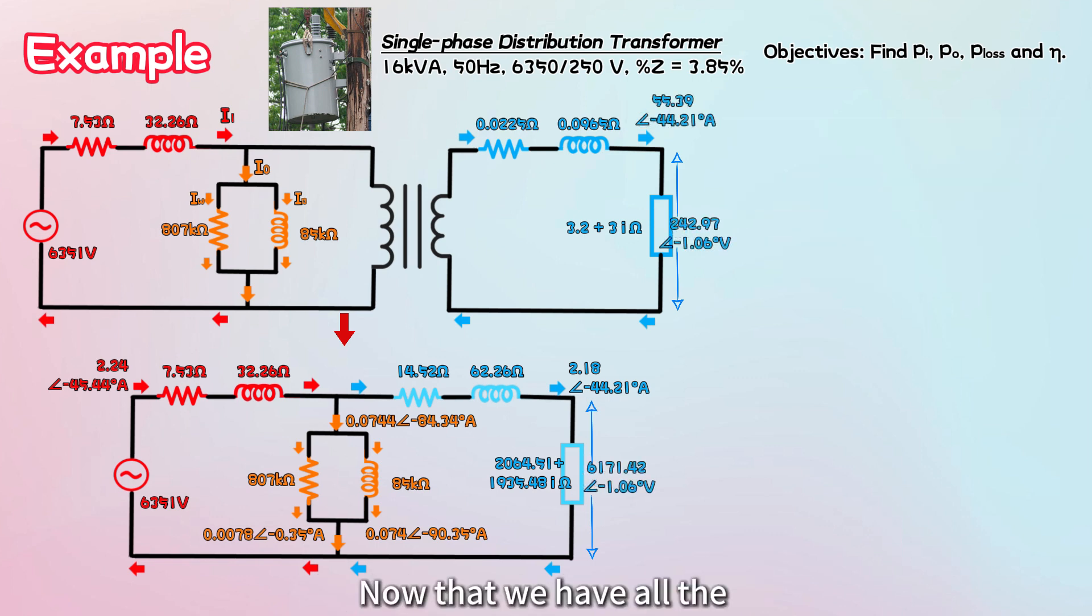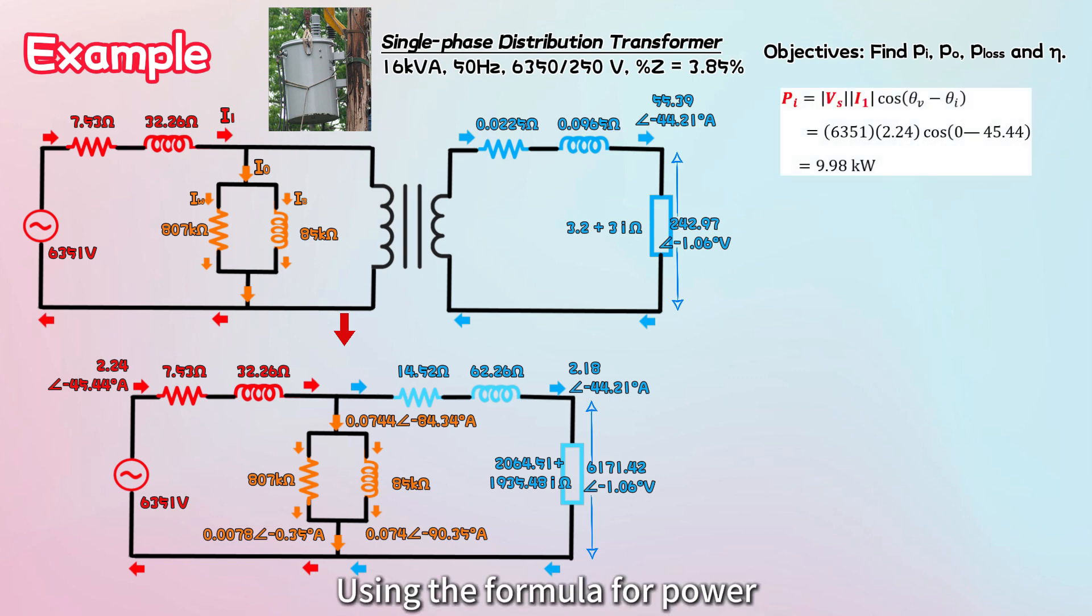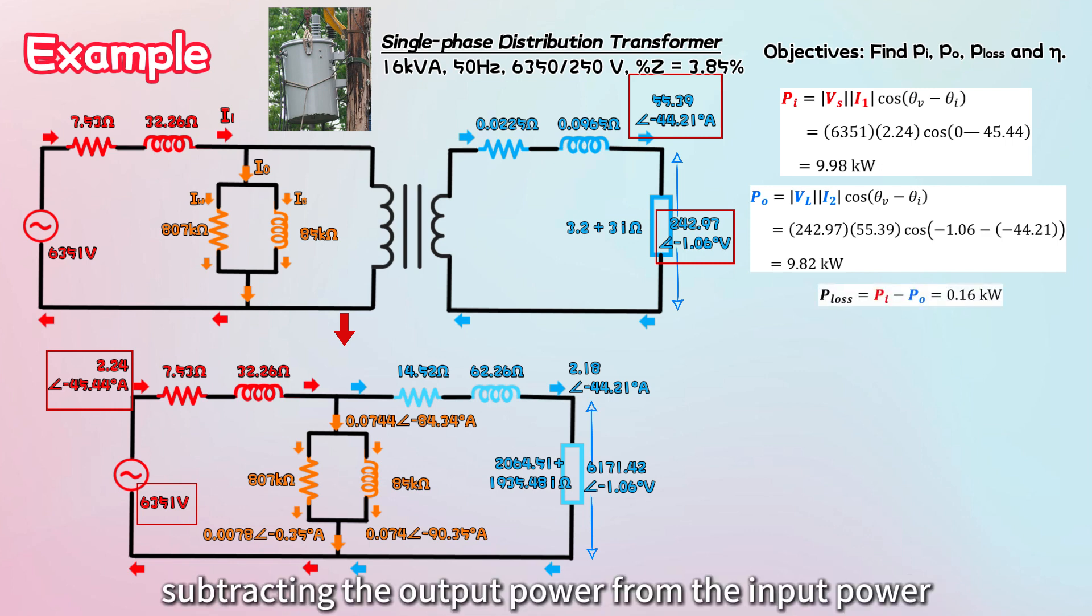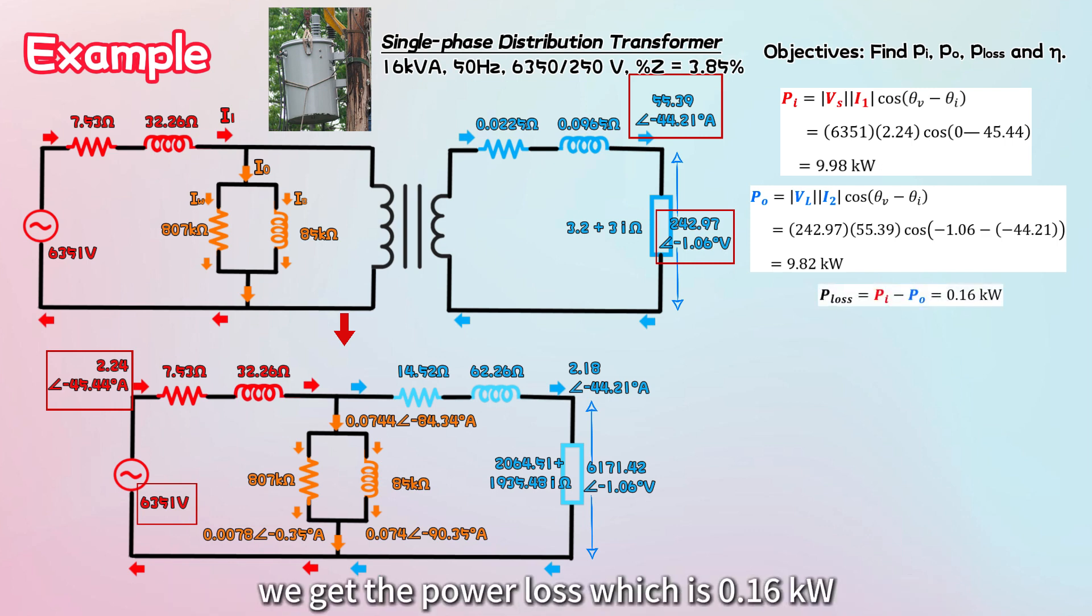Now that we have all the necessary voltage and current values, let's calculate the input power, output power, and power loss. Using the formula for power, which is voltage times current times the cosine of the phase angle difference between voltage and current, we find the following. The input power, calculated from the source voltage and I1, is 9.98 kilowatts. The output power, calculated from VL and I2, is 9.82 kilowatts. Subtracting the output power from the input power, we get the power loss, which is 0.16 kilowatts.